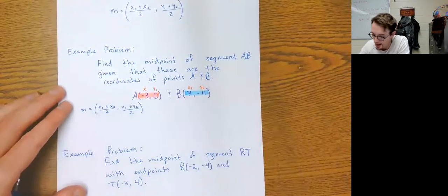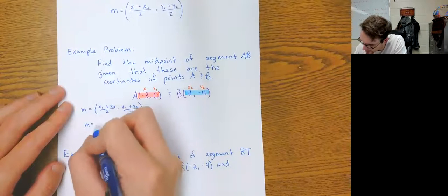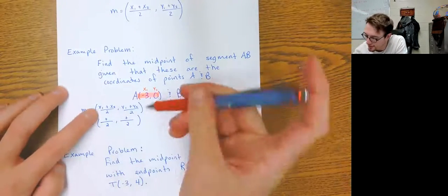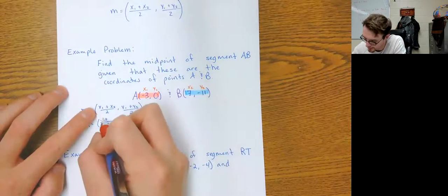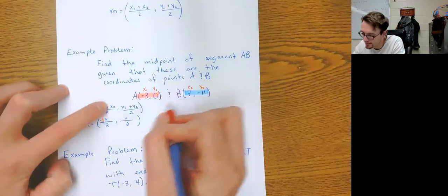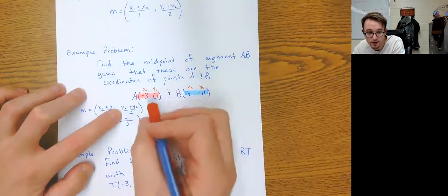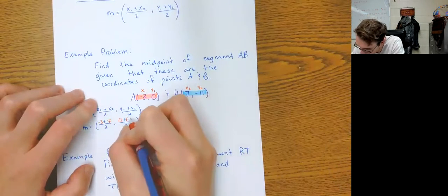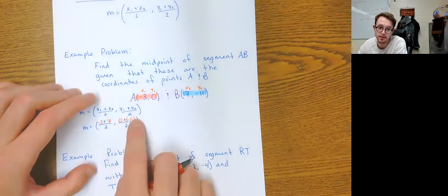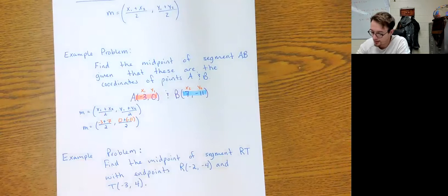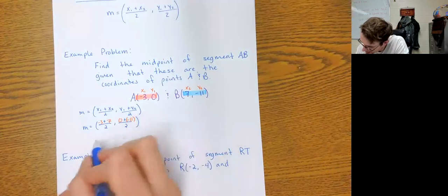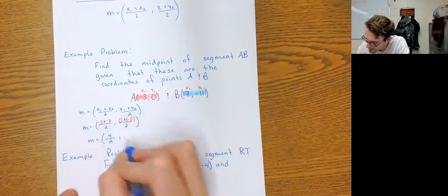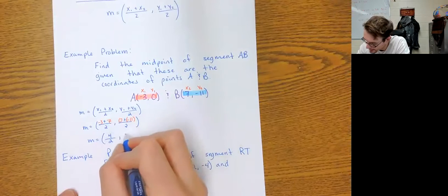So now I substitute in. M equals, all over two, put your plus sign, comma, all over two, put your plus sign, parentheses. When I substitute in for x sub 1, that's going to be negative 3. When I substitute in for x sub 2, that is going to be 7. When I substitute in for y sub 1, that's going to be 0. And when I substitute for y sub 2, I get negative 11 — put parentheses around the negative 11 because that's plus a negative. Now we simplify: negative 3 plus 7 is 4 over 2, comma, 0 plus negative 11 is negative 11 over 2.